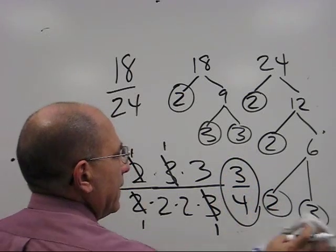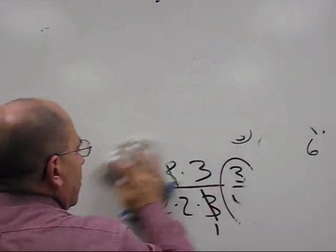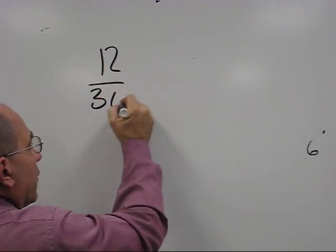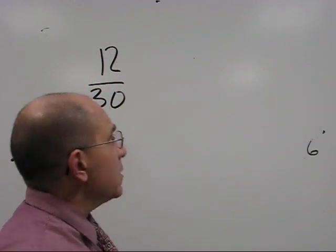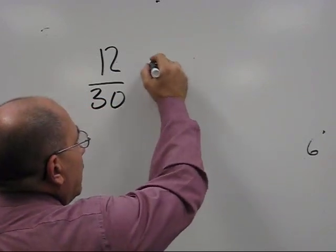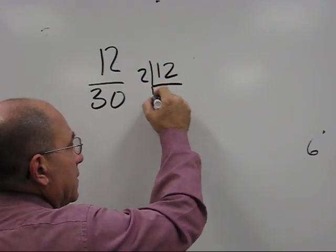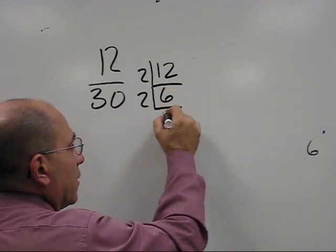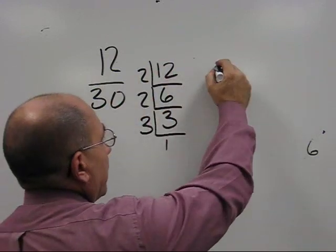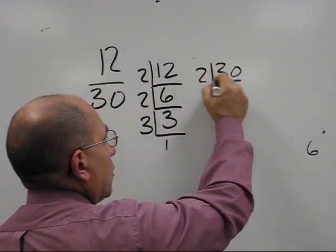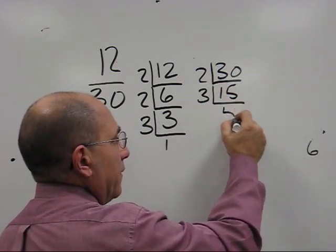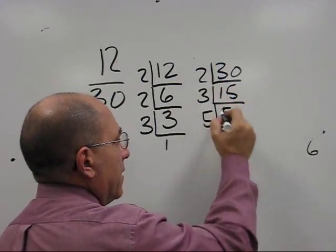Okay let's try that again. Suppose we have one that says 12/30. And we want to reduce this one. Okay again and this time I'm going to use the ladder for the factoring. So if I use 12 and I say 2 goes into 12 6 times. 2 goes into 6 3 times. And 3 goes into 3 1 time. Now I would use it on 30 and say all right 2 goes 15 times. 3 goes into 15 5 times. And 5 goes into that once.